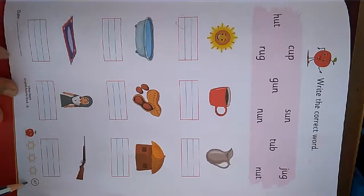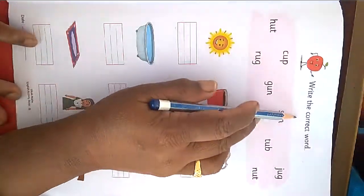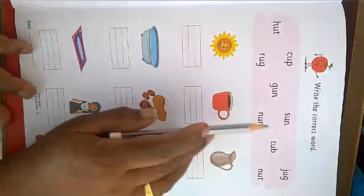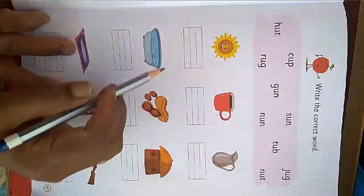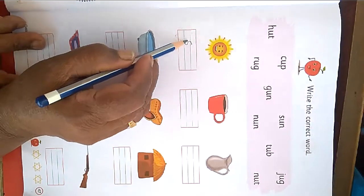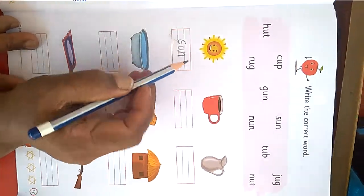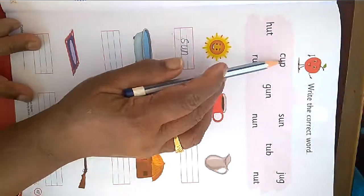Next page number 47. Write the correct way. Idhar dhiyaage web picture dekhi likh ni kha hai. S U N sun. C U P cup.